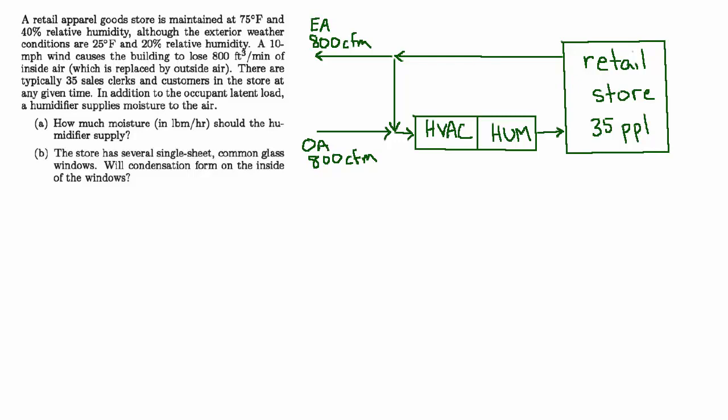There are typically 35 sales clerks and customers in the store at any given time. In addition to the occupant load, a humidifier supplies moisture to the air. (a) How much moisture in pounds per hour should the humidifier supply? And (b) The store has several single-sheet common glass windows. Will condensation form on the inside of the windows?